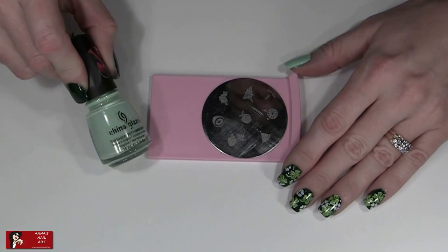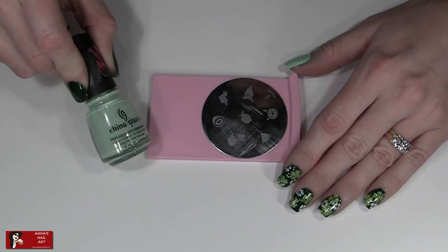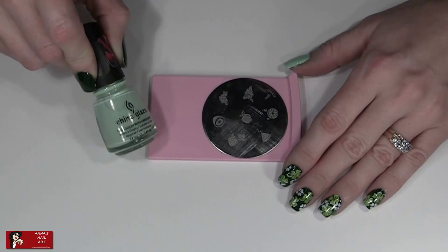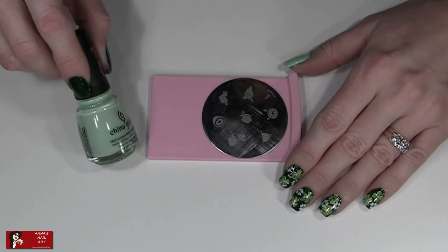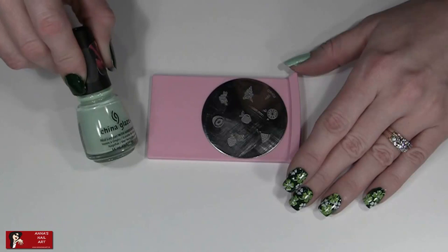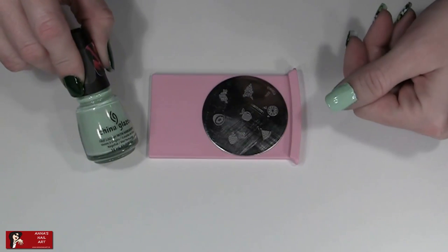For our second design, which is our pot of gold at the end of the rainbow design, you will need to base coat your nail with a light green color. I've chosen to use the China Glaze called Refresh Mint, and I did two coats of that and let it dry really well.